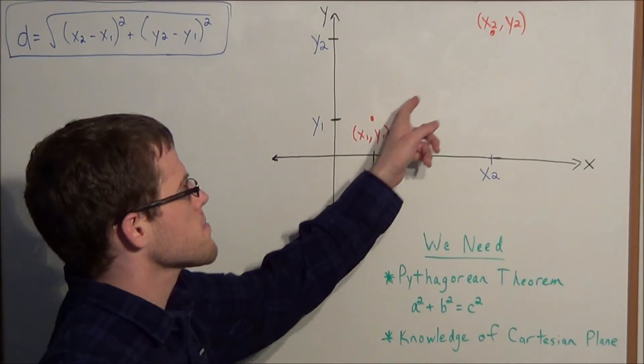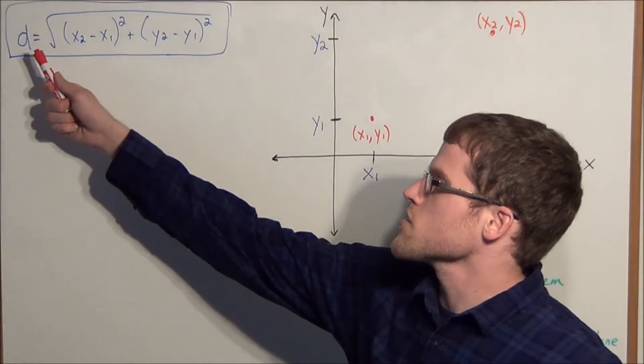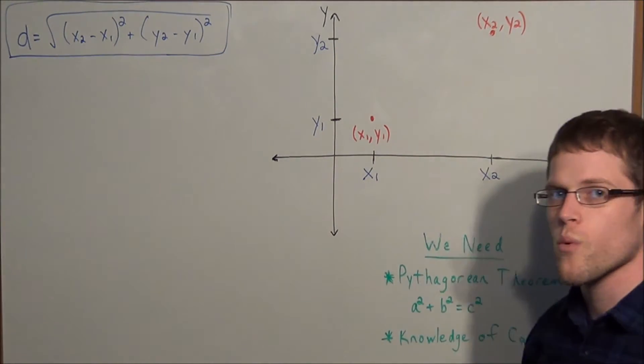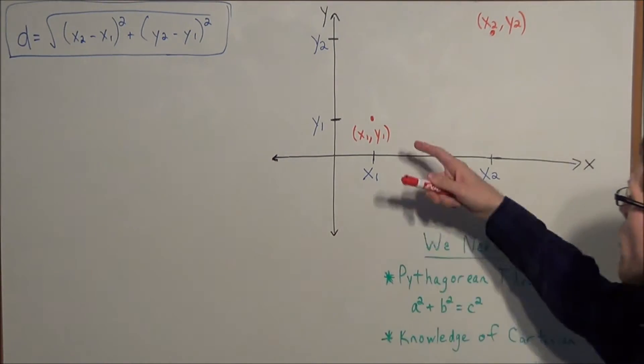And I want to show that the distance between these two points can be found by using the distance formula: d equals the square root of (x2 minus x1) squared plus (y2 minus y1) squared.